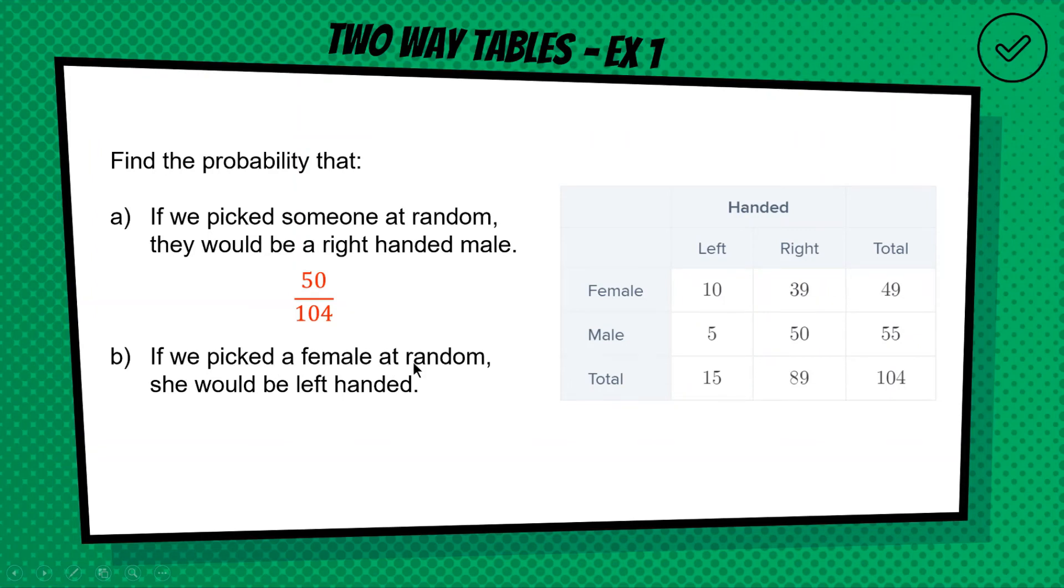Now the next one is a bit trickier. It's saying if we picked a female at random. Okay, so we aren't picking a person at random, we are picking from the 104, we're picking from a female, which means our total that we're picking from is now 49 over here. Okay, if we picked a female at random, what was the probability that she would be left-handed? Okay, so females, 49 in total, left-handed is 10 of them. So our probability is going to be 10 out of 49. Probably should have simplified my answer in part A, pardon me.